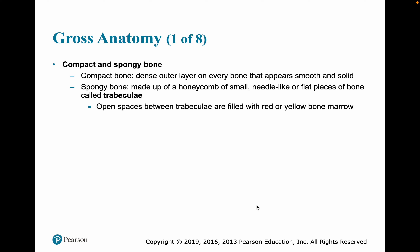Compact bone is dense, usually forming the outer layer on every bone — it appears smooth and solid. When you look at a bone in the lab, what you'll be looking at is the outside of compact bone.